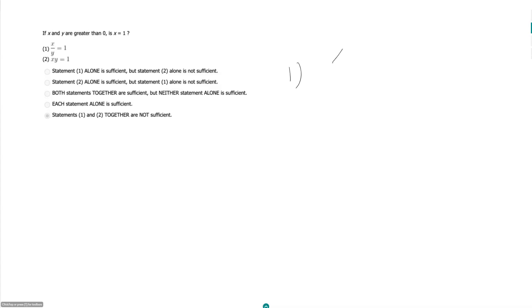Statement 1 says x over y is equal to 1, and both our numbers have to be positive. So when is this going to be true? Well, the only way you can divide one number by another number and get one is if those two numbers are equal to each other.